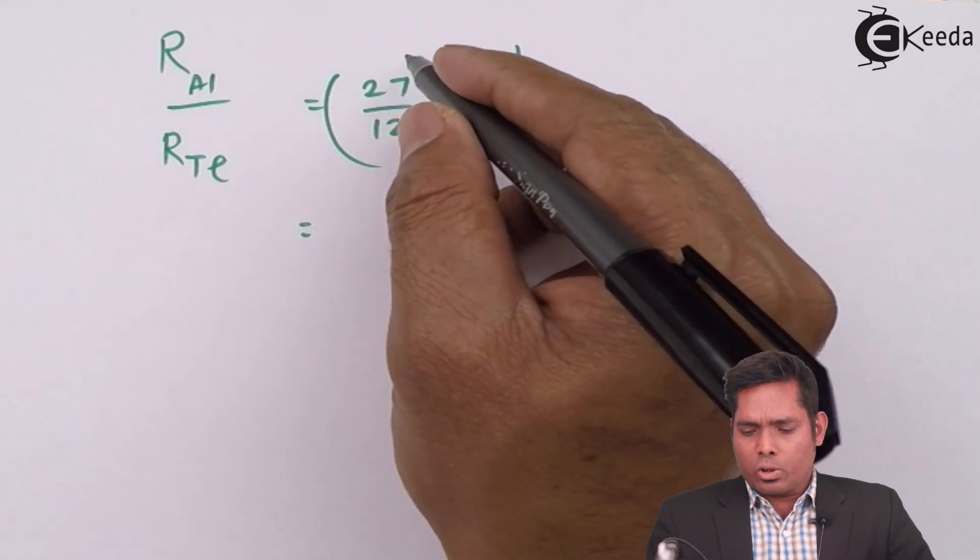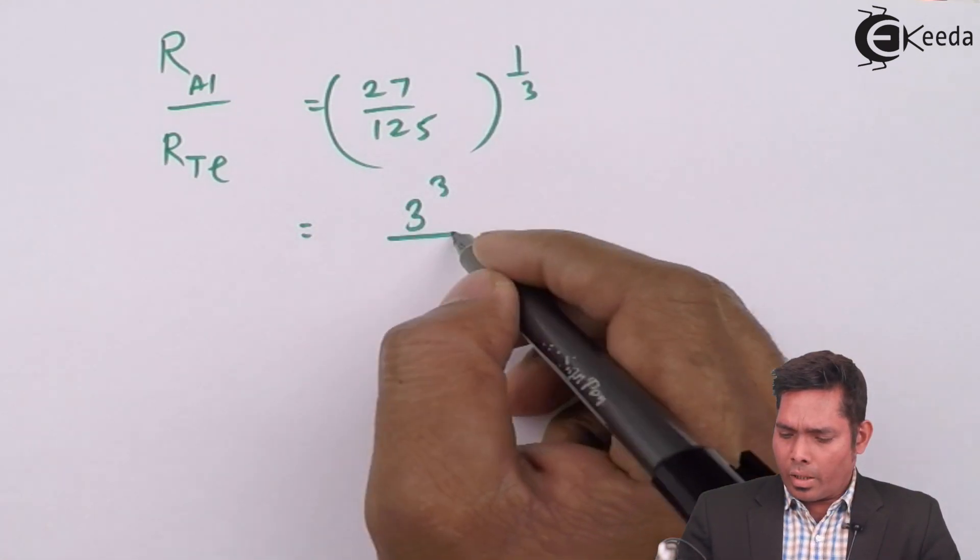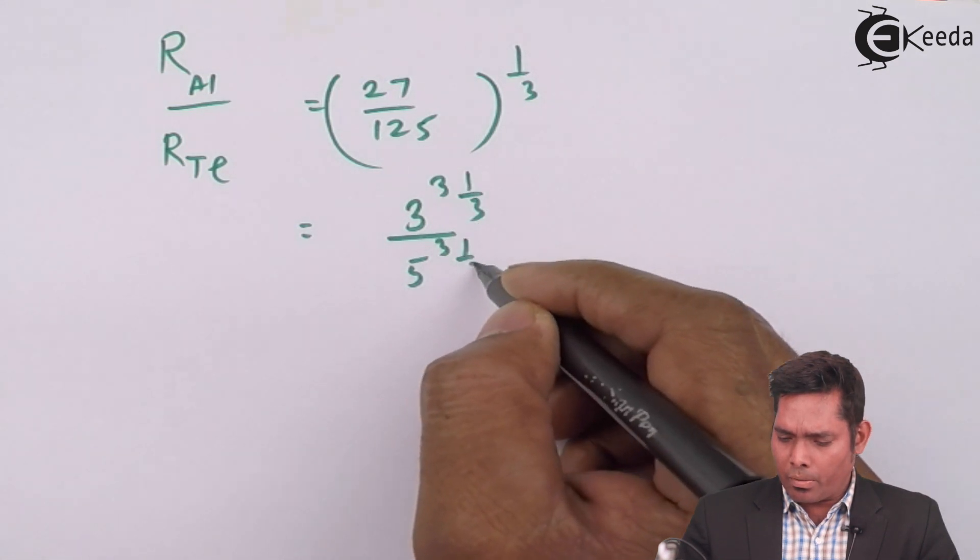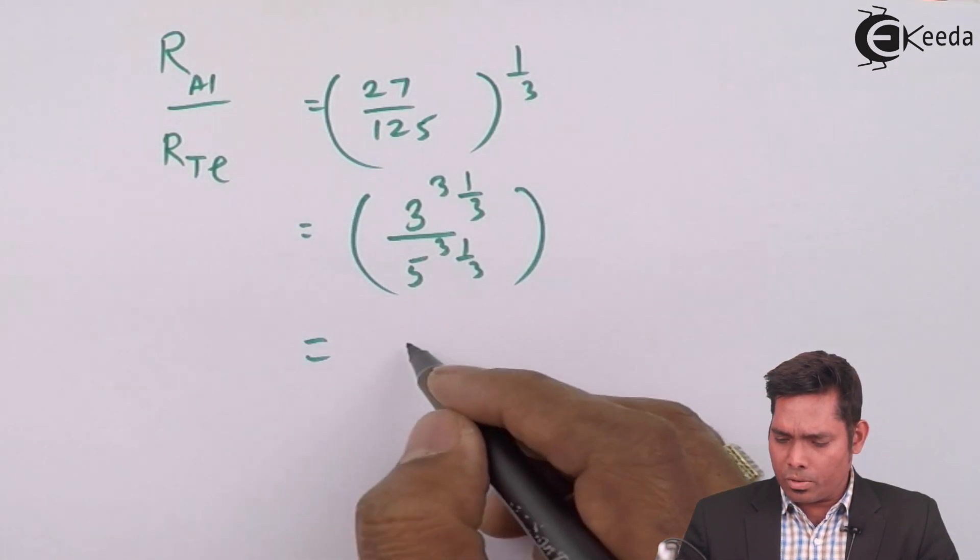This is 3 raised to 3 and this is 5 raised to 3 to the power one by third. So this becomes 3 by 5.